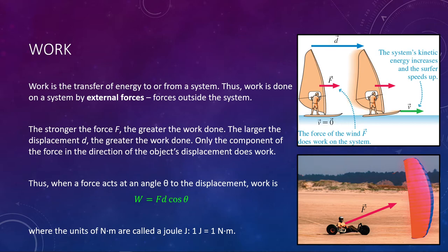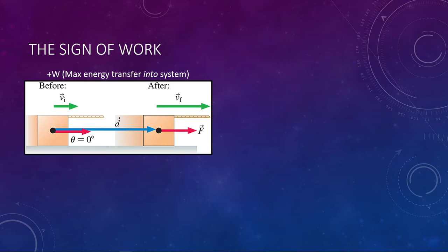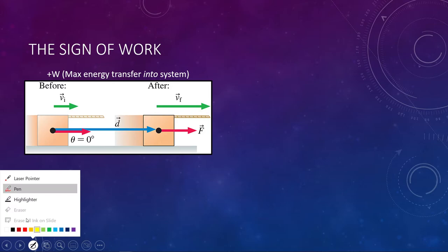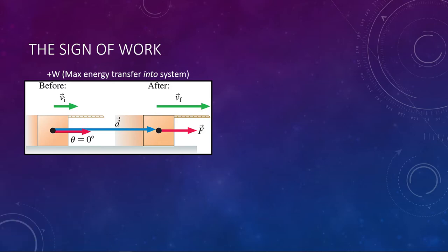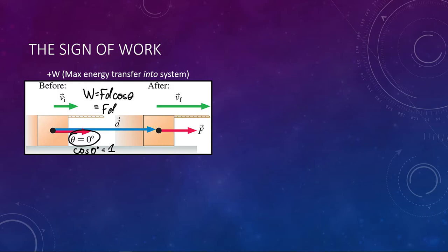One important thing to note: work can be negative. If you pull a box straight to the right and the displacement is also to the right, the angle is zero degrees. Cosine of zero is one, so work equals Fd — it's positive and the maximum amount of work you can do on that object. If you angle the rope at, say, 45 degrees, you still get a positive value, but it will be smaller because cosine of any angle between zero and 90 is less than one. So you still have positive work, but less of it.